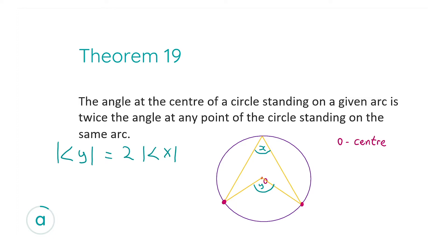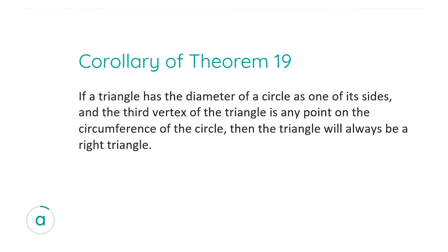A corollary of Theorem 19 is this: if a triangle has the diameter of a circle as one of its sides and the third vertex — just another word for point of the triangle — is any point on the circumference, then the triangle will always be a right angle. I'm going to go back to our question now to explain it with the example.